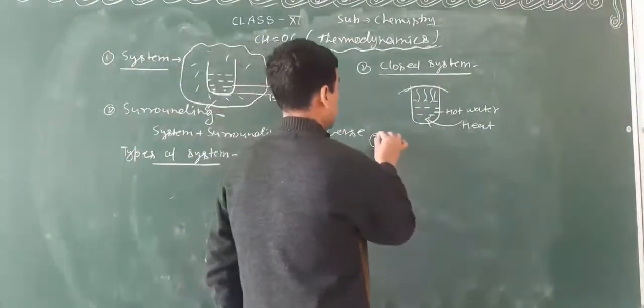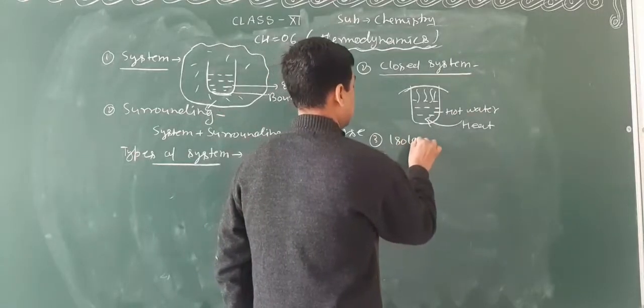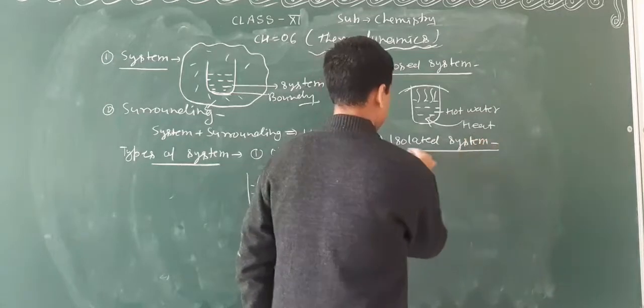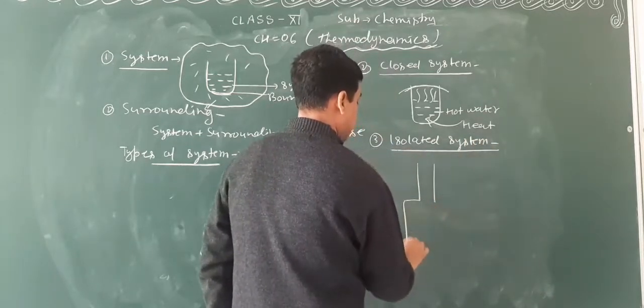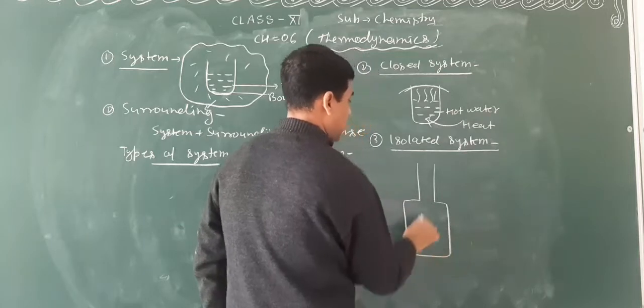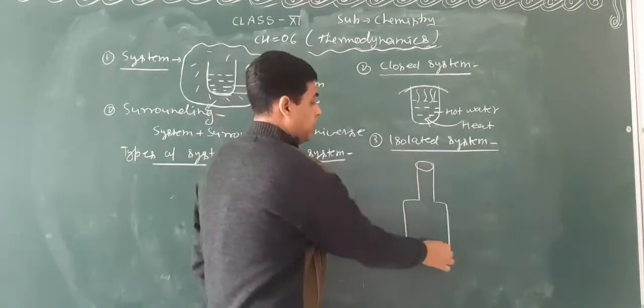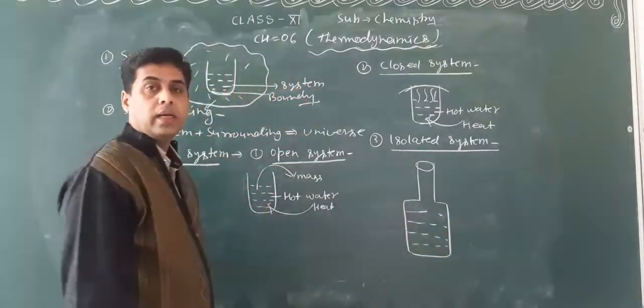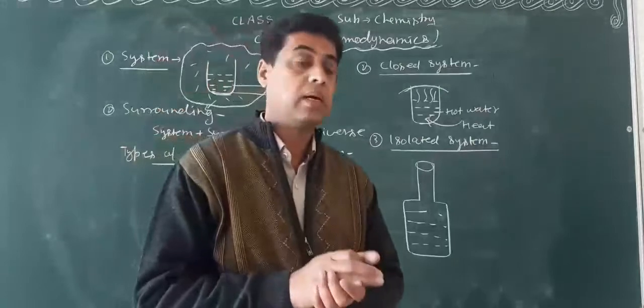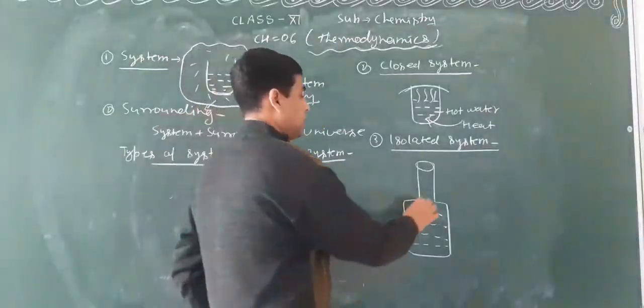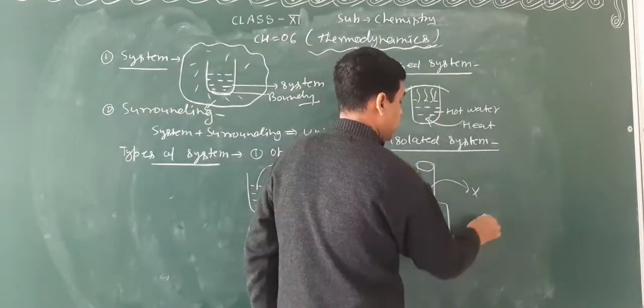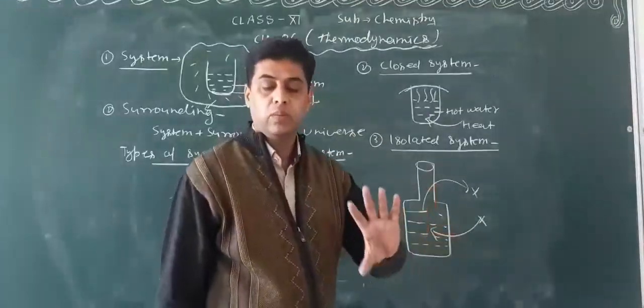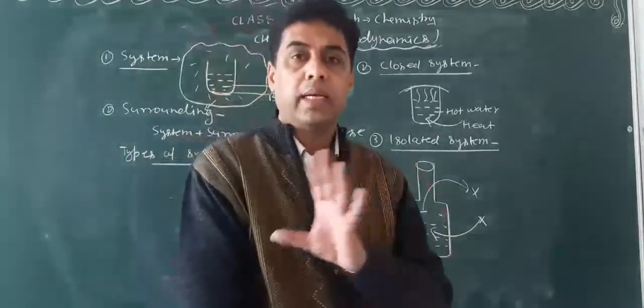Third is isolated system. If we have a thermos flask in our house and we put warm water in it, we can keep it for some hours constantly because neither mass nor heat will be removed from this system.